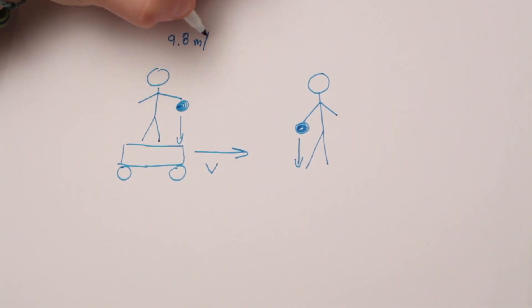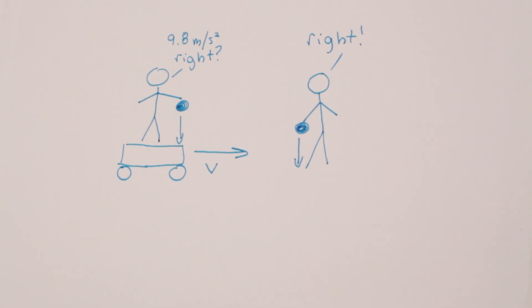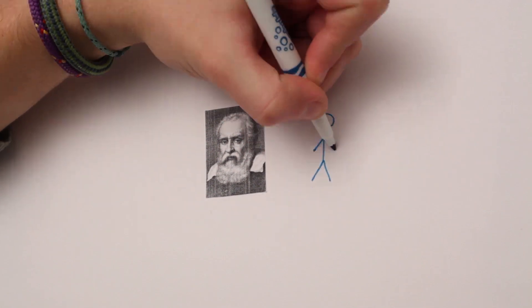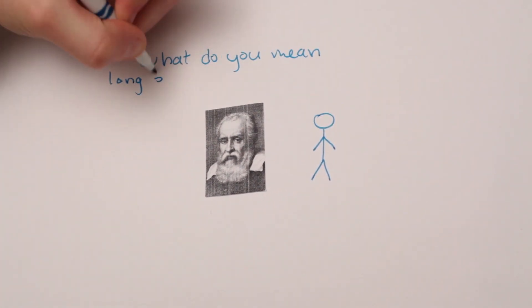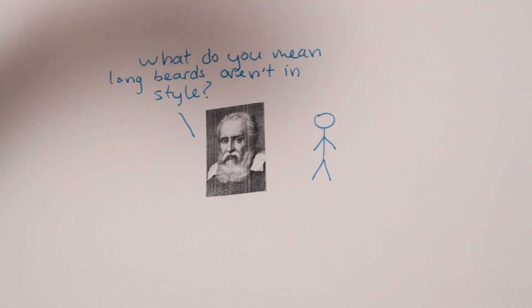This could be seen with the train example, as the person on the train saw the ball drop straight down, as someone standing still would have. Everything considered so far has been Galilean relativity, but to get an even larger appreciation for relativity, we need to look at more recent examples.